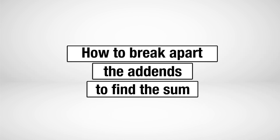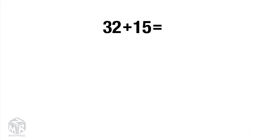How to break apart the addends to find the sum? Two-digit addition. Let's try an example: 32 plus 15.